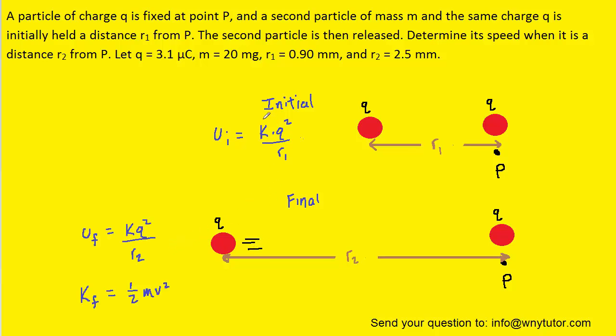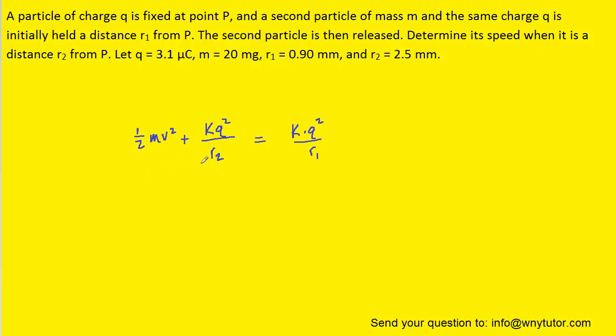Now through the conservation of energy we can take the total initial energy and set it equal to the total final energy. We put the final energies on the left side and the initial energy on the right side because our goal is to solve for the speed V.